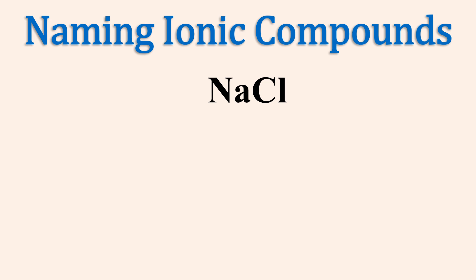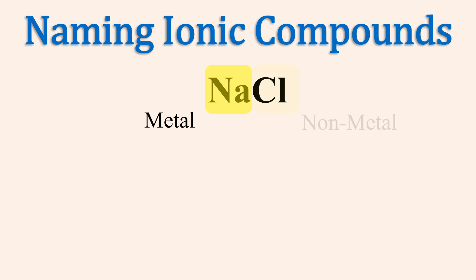Let's name the compound with the chemical formula NaCl. First, let's identify the species involved. Na is the elemental symbol for sodium, which is a metal, and Cl is the elemental symbol for chlorine, which is a nonmetal.